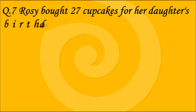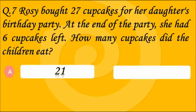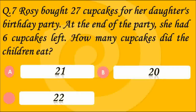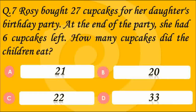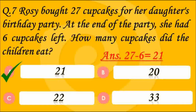Question number 7. Rosie bought 27 cupcakes for her daughter's birthday party. At the end of the party she had 6 cupcakes left. How many cupcakes did the children eat? Answer A — 21. How does 21 come? 27 minus 6 is 21. We get the total cupcakes the children ate, which is 21.